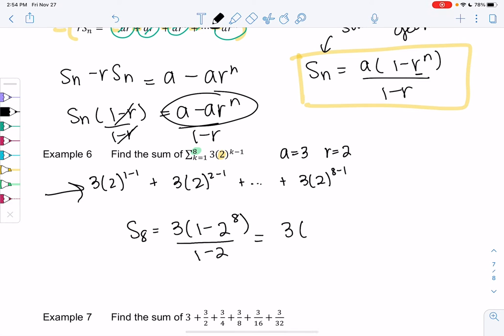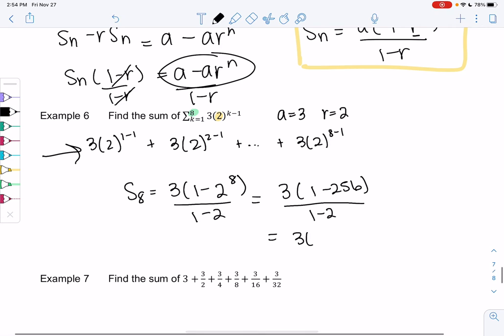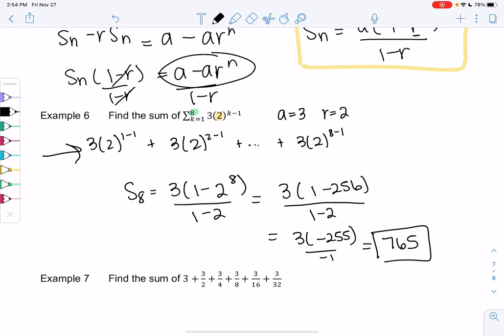We get 3, and then 2 to the 8th I think is 256. So 1 minus 256 over 1 minus 2. We get 3 times 255 over negative 1. So 3 times 255, I think you'll get 765. That's the sum of the first 8 terms.